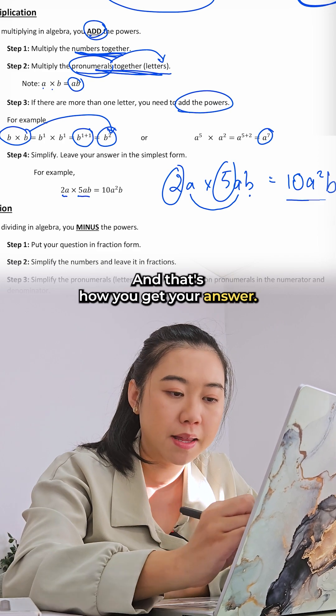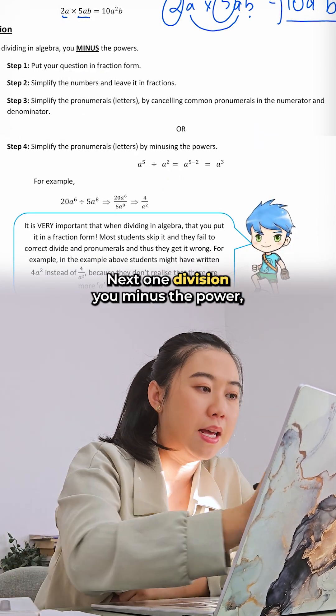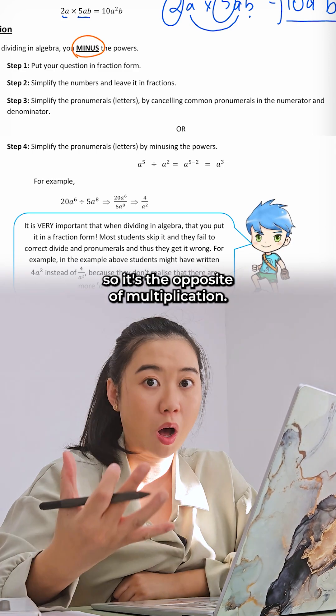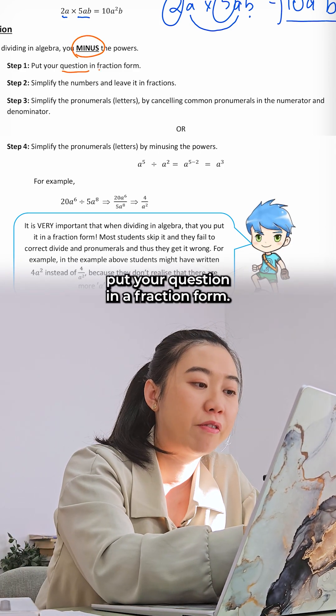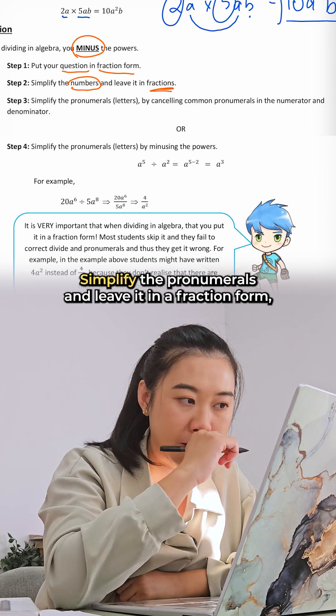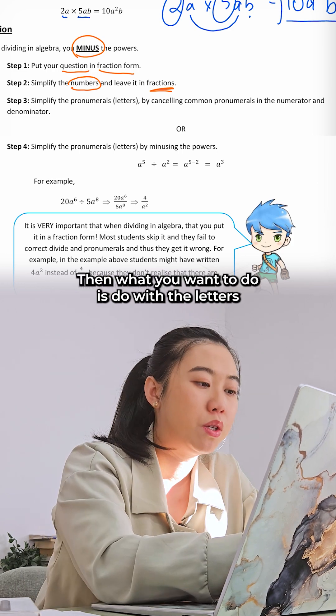Next one, division. You minus the power, so it's the opposite of multiplication. What you want to do is first put your question in a fraction form, simplify the numbers and leave it in a fraction form. Then deal with the letters afterwards by cancelling out common pronumerals.